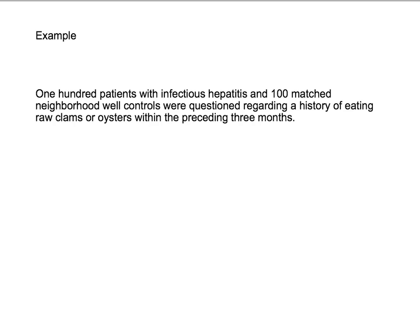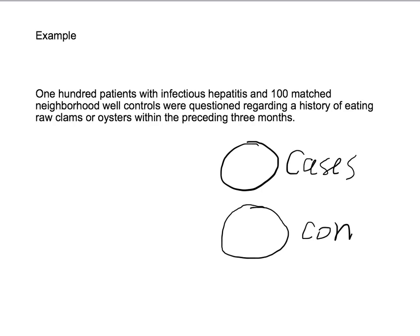In this situation, we have 100 patients with infectious hepatitis and 100 matched neighborhood well controls who were questioned regarding a history of eating clams or oysters within the preceding three months. You start first with cases, pick those cases, and then you want somebody to compare them with — a control group. You pick another group of people similar to your cases. In this case, controls were people who lived in the same neighborhood, assumed to be similar in environmental exposure, socioeconomic status, and eating habits. They were questioned about previous behavior for the past three months, so it's a retrospective analysis — but it's a case-control study.